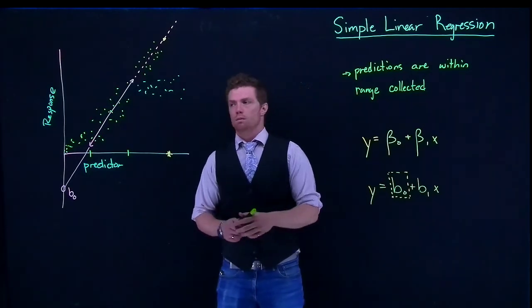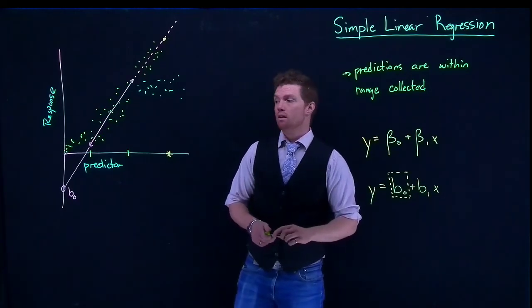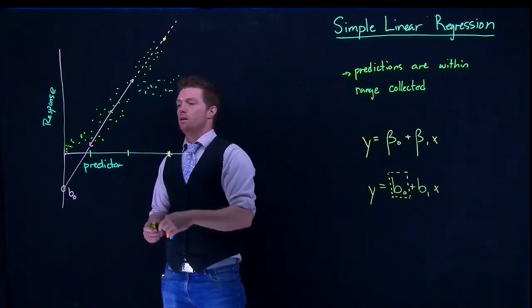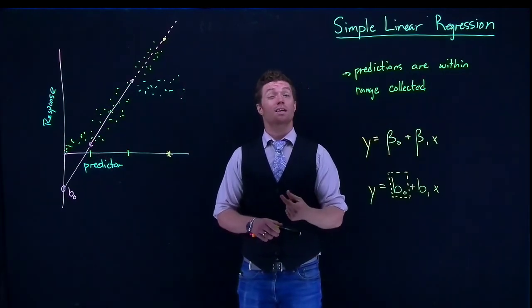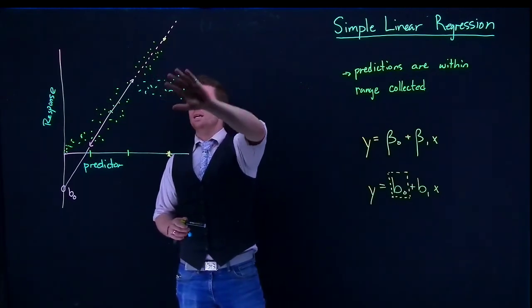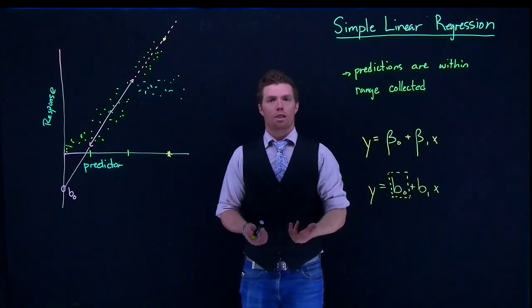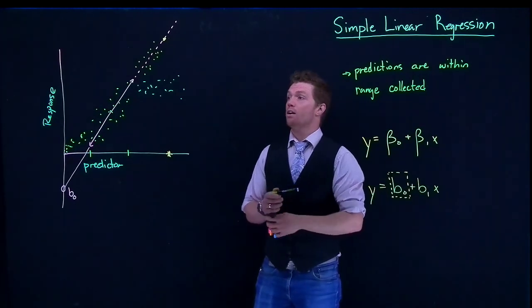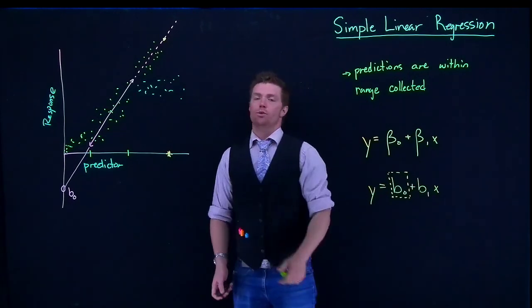So in recap, we need to make sure that the predictions that we are making from our model are within the range of the data that we have collected or just a little bit above and a little bit below. But the further and further we get away from the range that we actually collected our data, the more and more likely that we are going to have serious errors from what reality actually is doing.